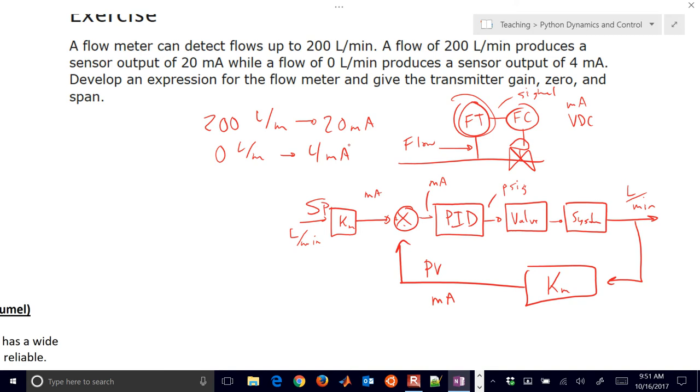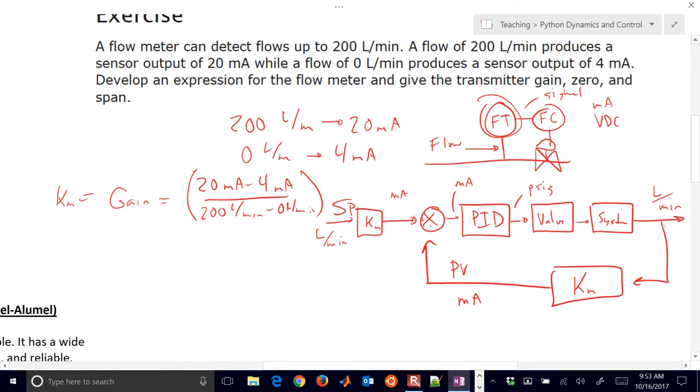So we want to develop an expression for the flow meter and give the transmitter gain, zero, and span. So let's just do the gain first of all. The gain is going to be equal to the, this change, the four to 20 milliamp. So 20 milliamp minus four milliamp divided by 200 liters per minute divided by zero liters per minute. So I'm going to take whatever set. So this is going to be our Km value that we calculated there. So let's go ahead and calculate this. Just get a number there. We'll do 20 minus four divided by 200. And that's going to be 0.08. So that has units of milliamps per liters per minute.